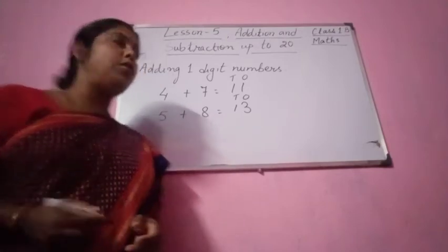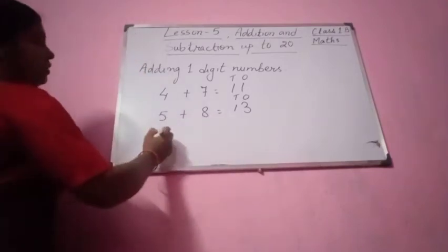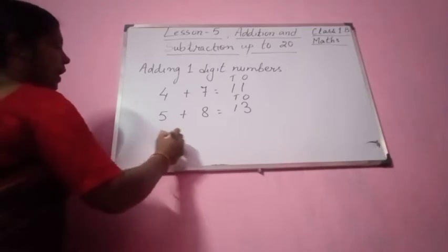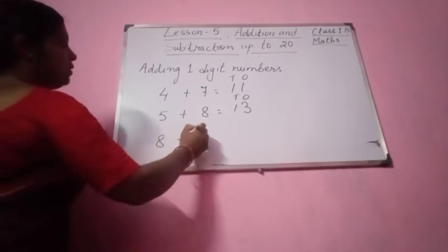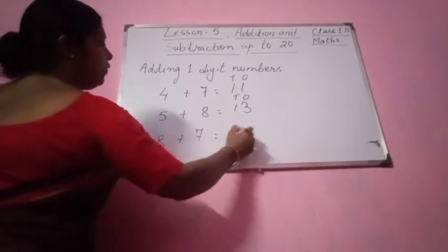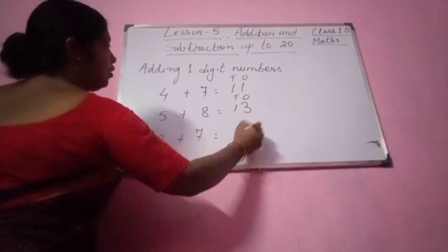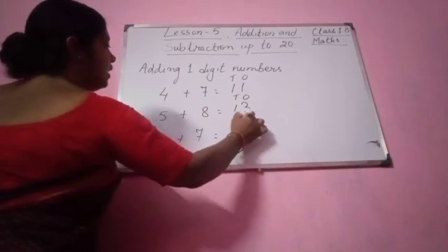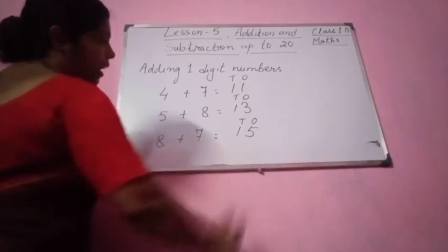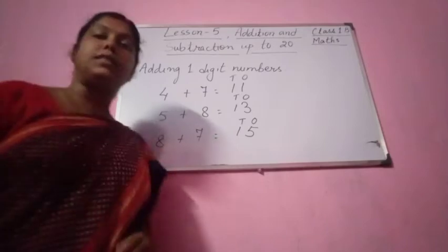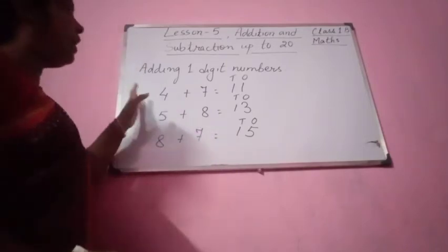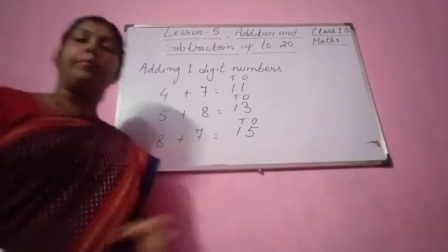Let us take one more example. Let us take 8 plus 7. So 8 plus 7 equal to 15. Here also you see 1s and 10s — 1 ten and 5 ones. So this is how we are adding one digit numbers.